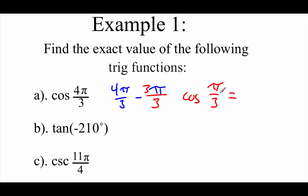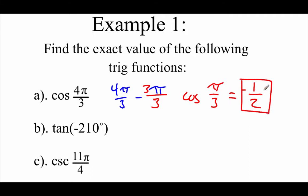Now π over 3 is one of our first quadrant angles that we're supposed to know really well. The cosine there, or the x value there, is 1/2. Now what we need to do is take a look at our original angle theta. It's 4π over 3, which is a third quadrant angle. Cosines in the third quadrant are negative, so instead of 1/2, we need to make this negative 1/2 to get our final answer.